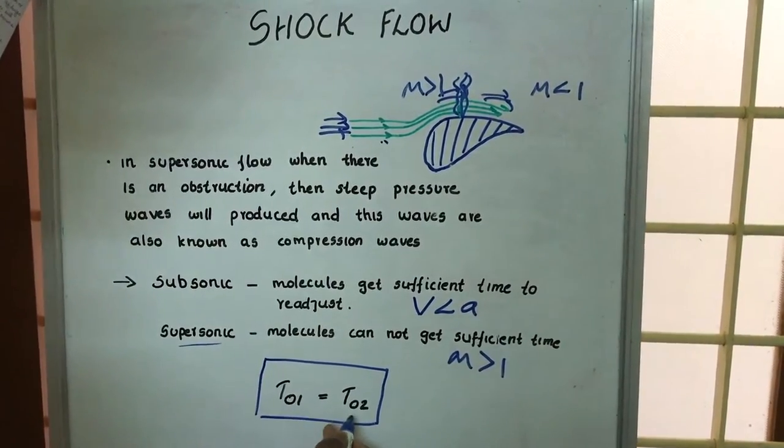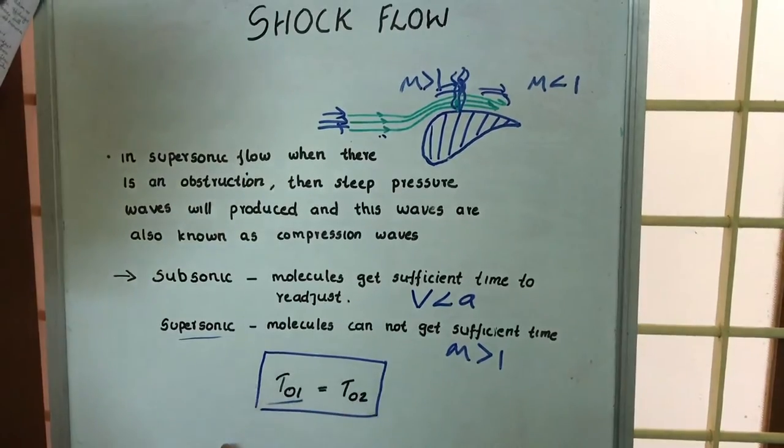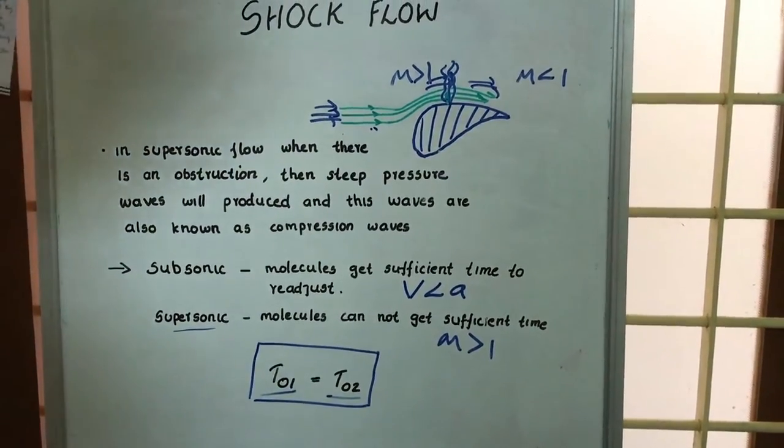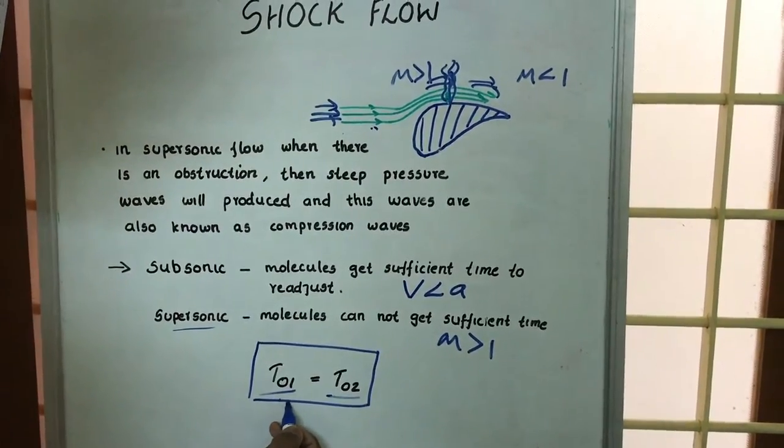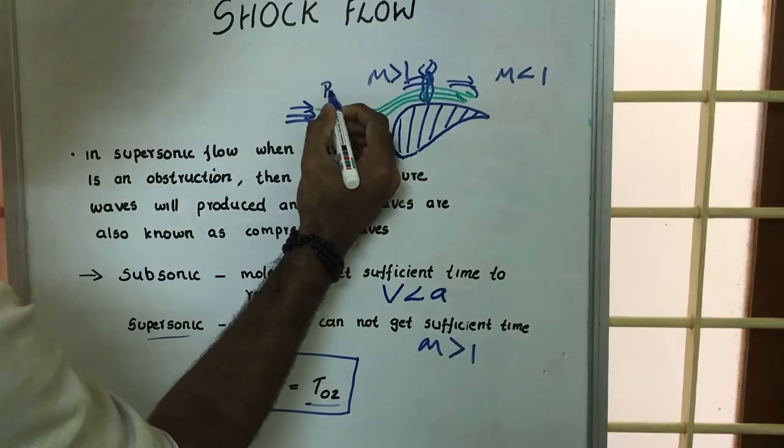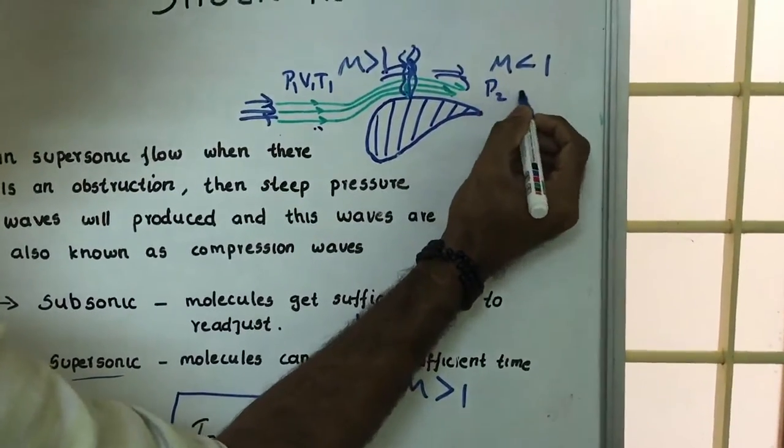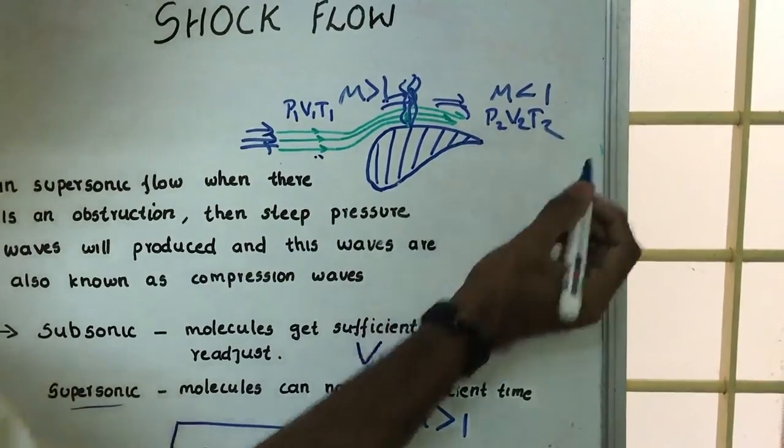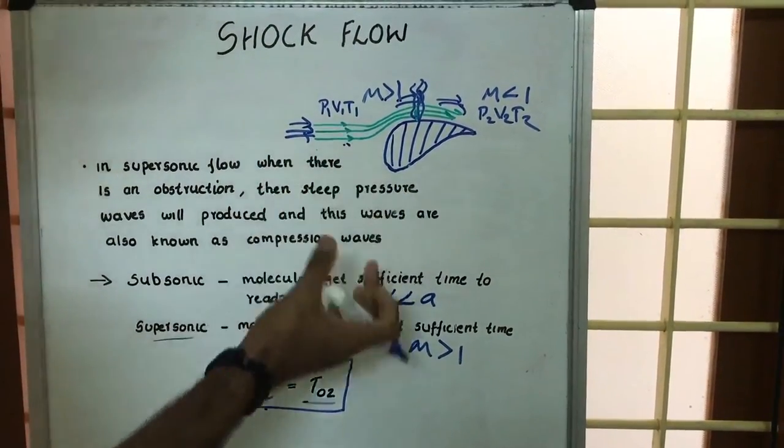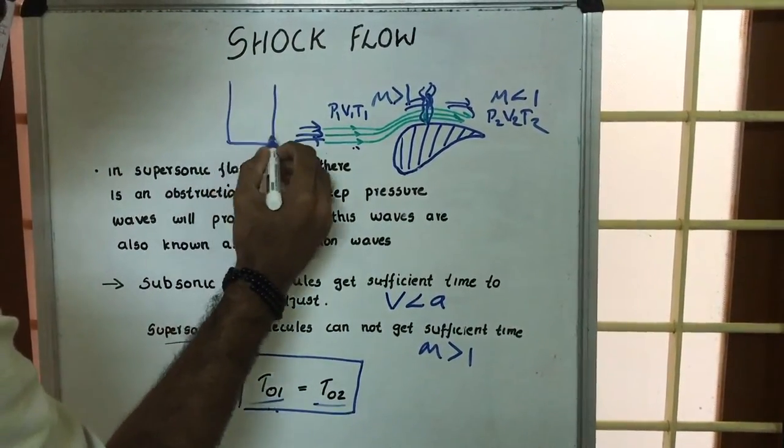In normal shock waves the stagnation conditions are given as T01 is equal to T02, where T01 is the initial stagnation condition. Here we know that the conditions are P1, V1, T1, and here after shock it is P2, V2, T2.